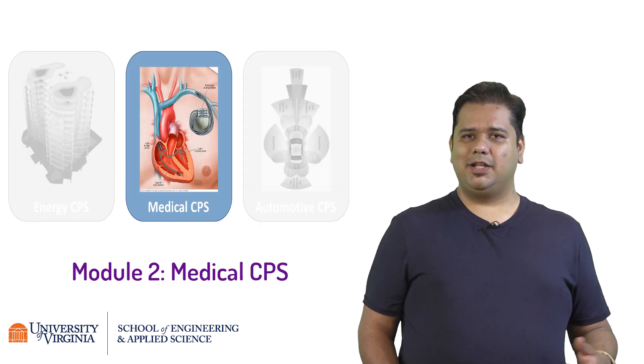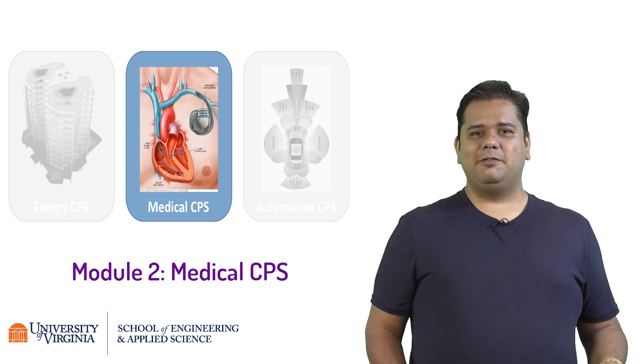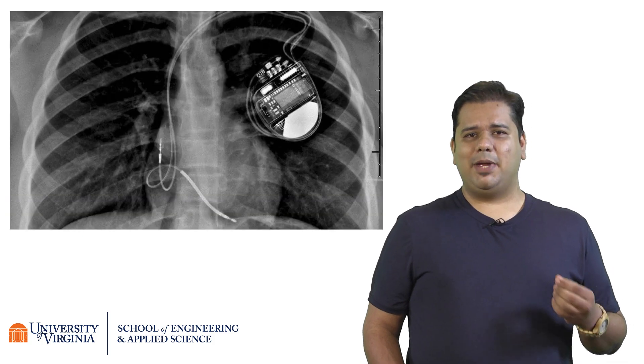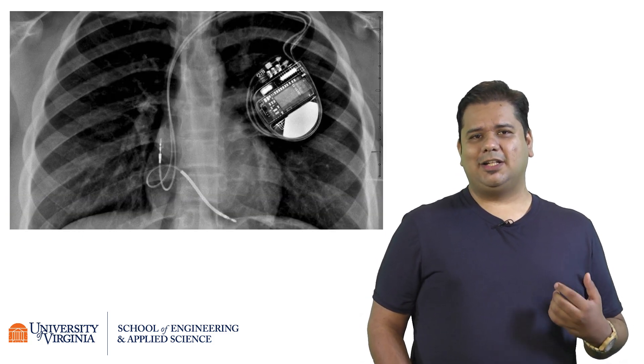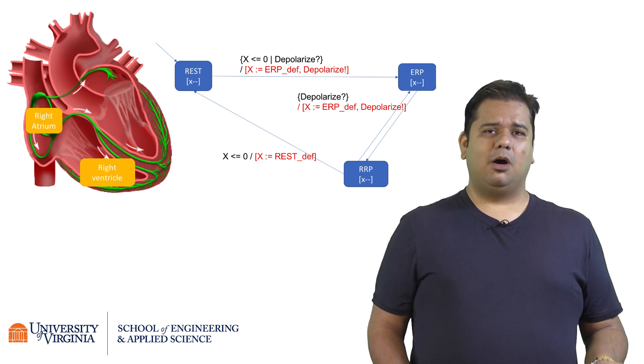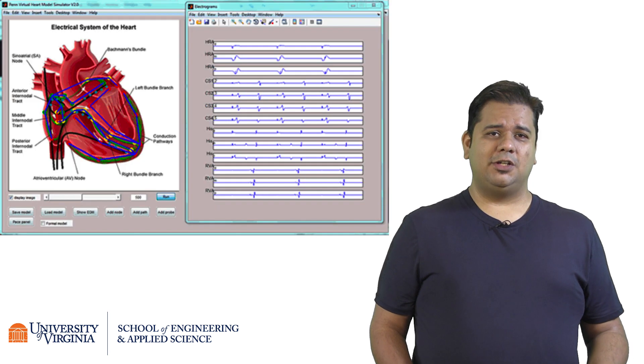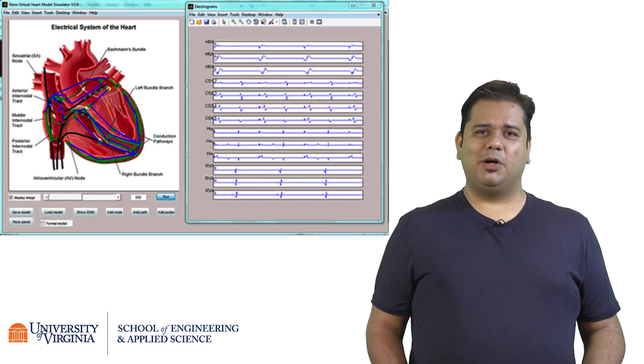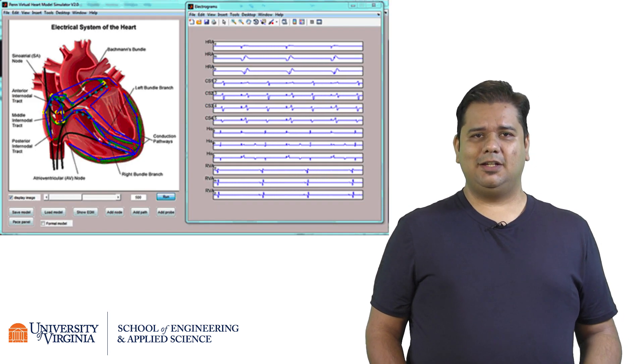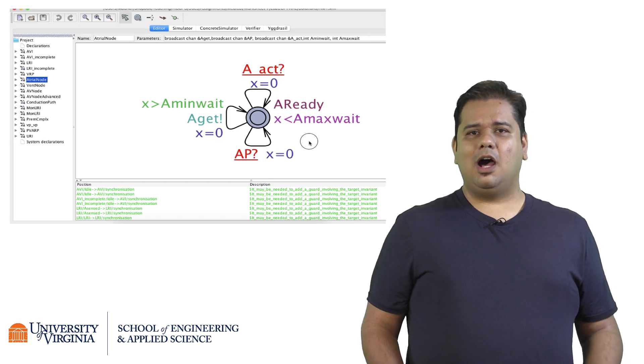In the second module, the medical cyber-physical systems, we will tackle a really hard question of how can we verify that the software on a pacemaker or an implantable cardiac device will always be safe? We will use a different kind of model called Timed Automata to model the electrophysiology of a human heart and learn about the principles of model checking. Here, you will learn how to work with a model checking tool called UPPAAL.